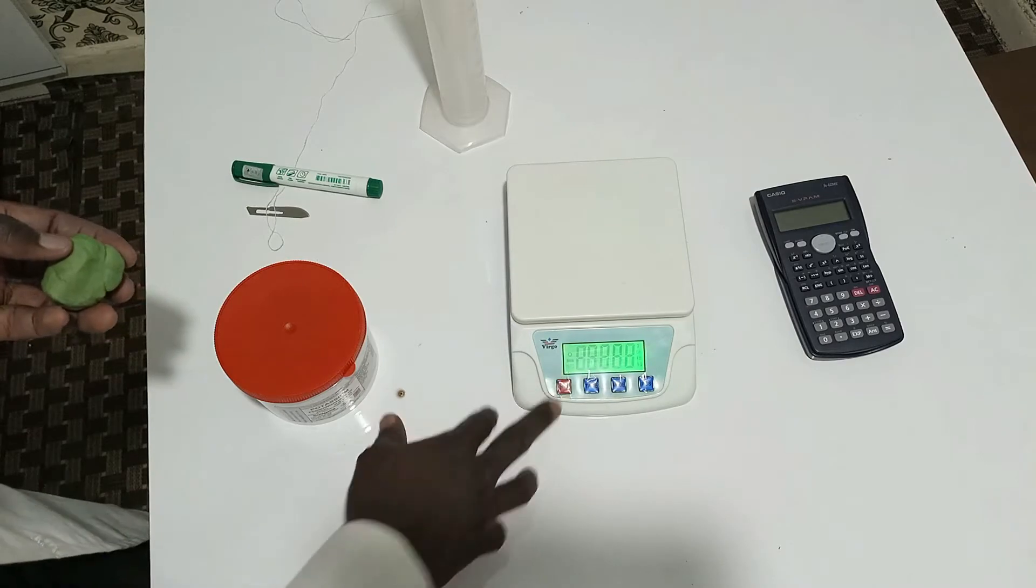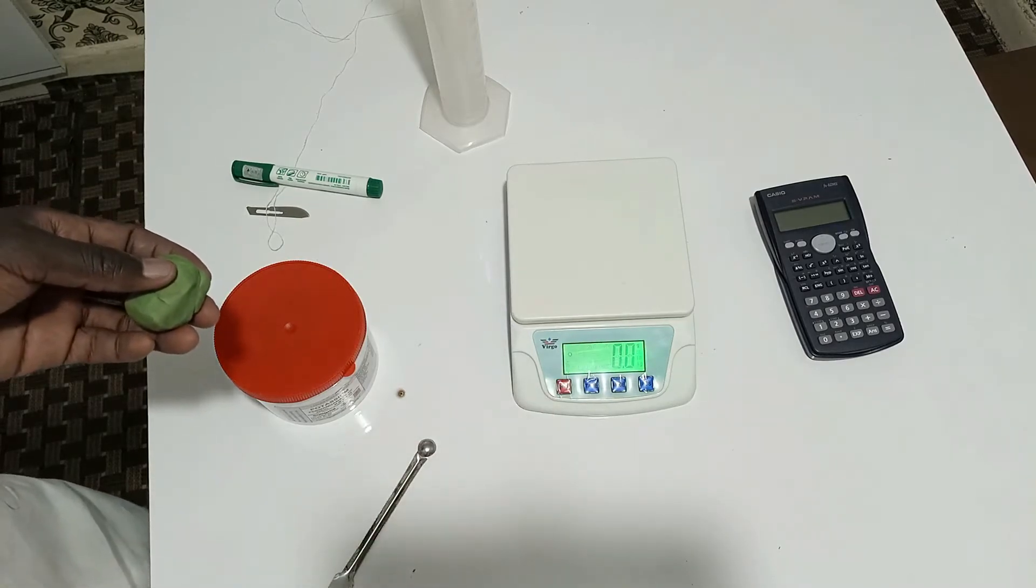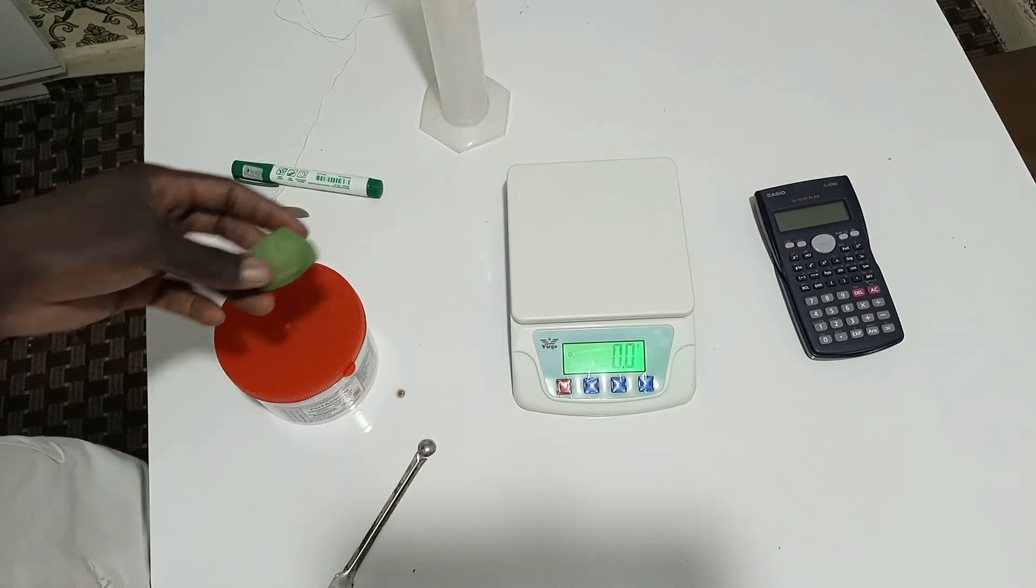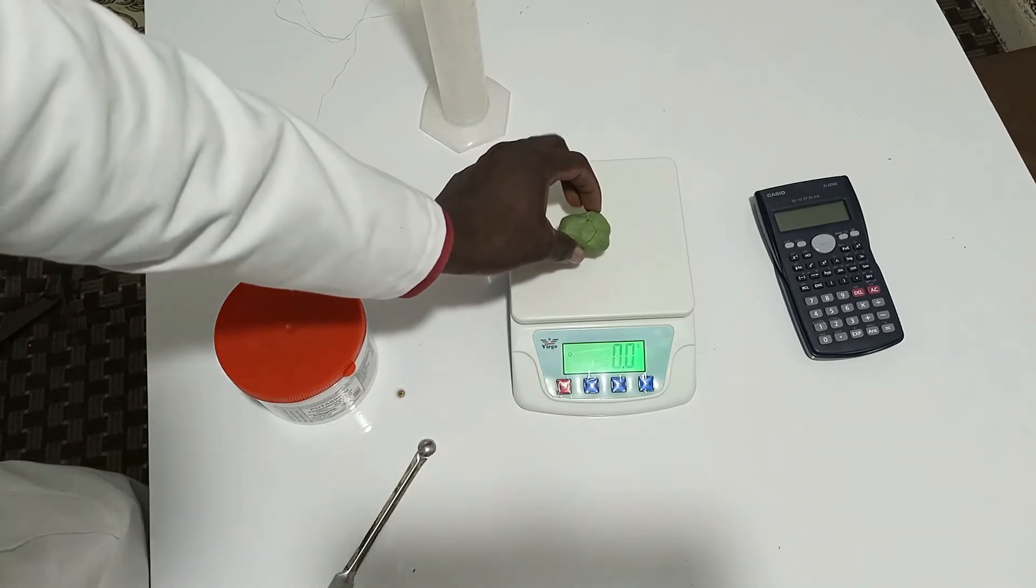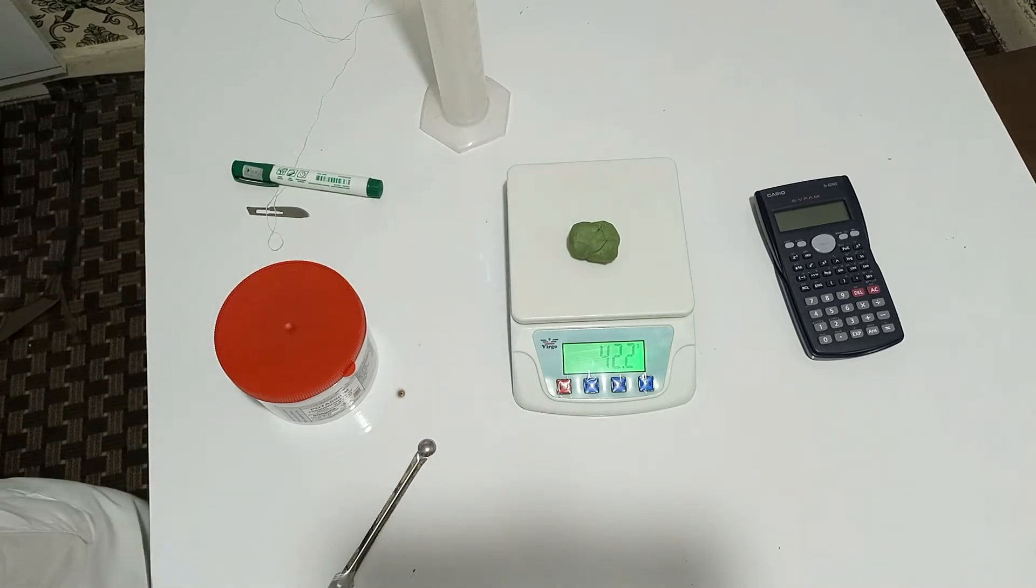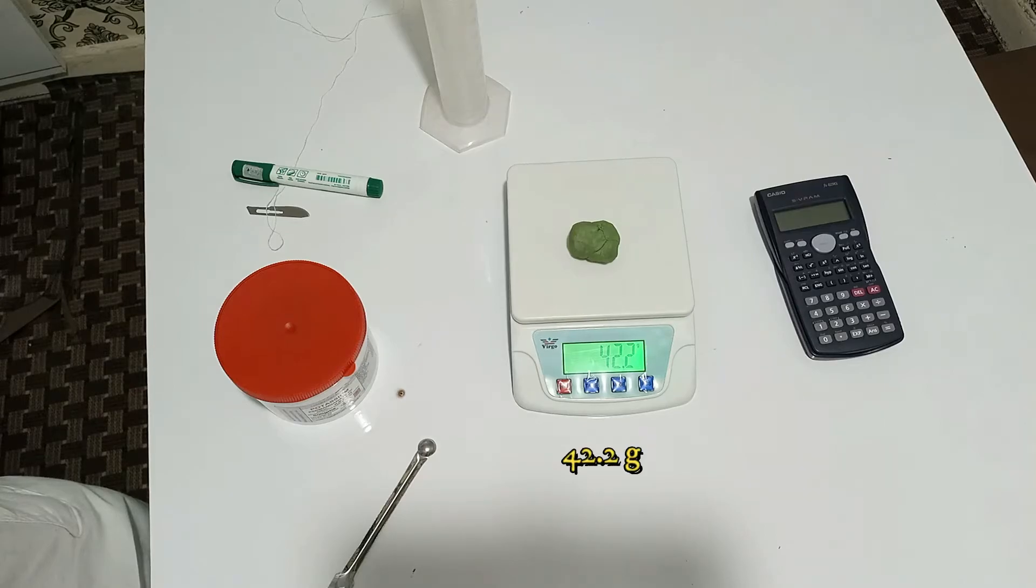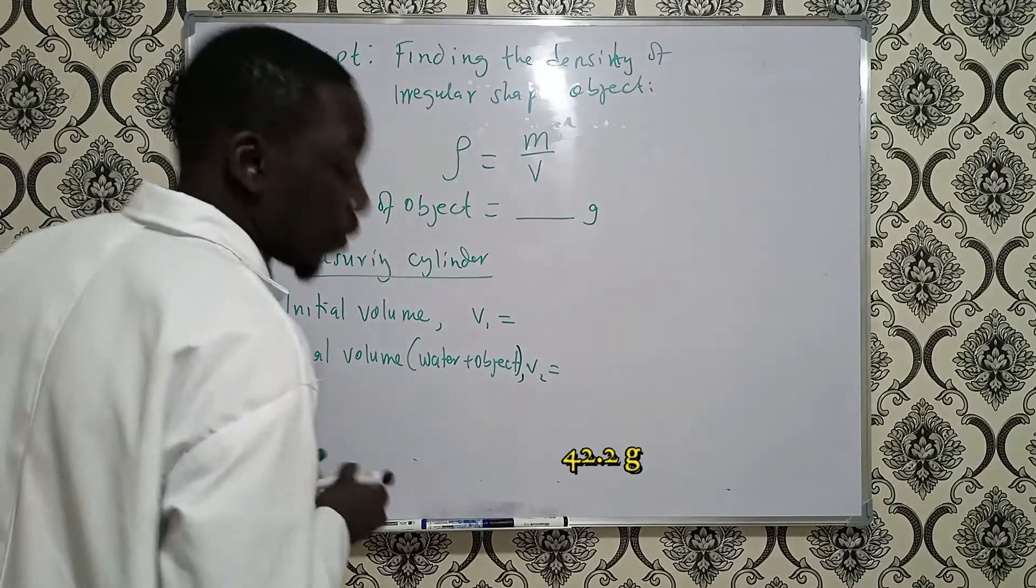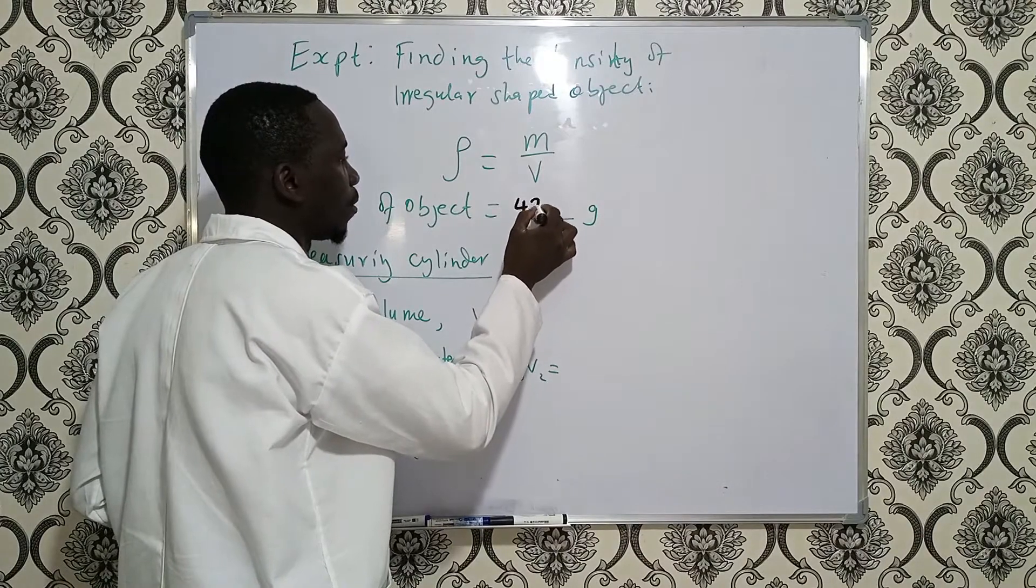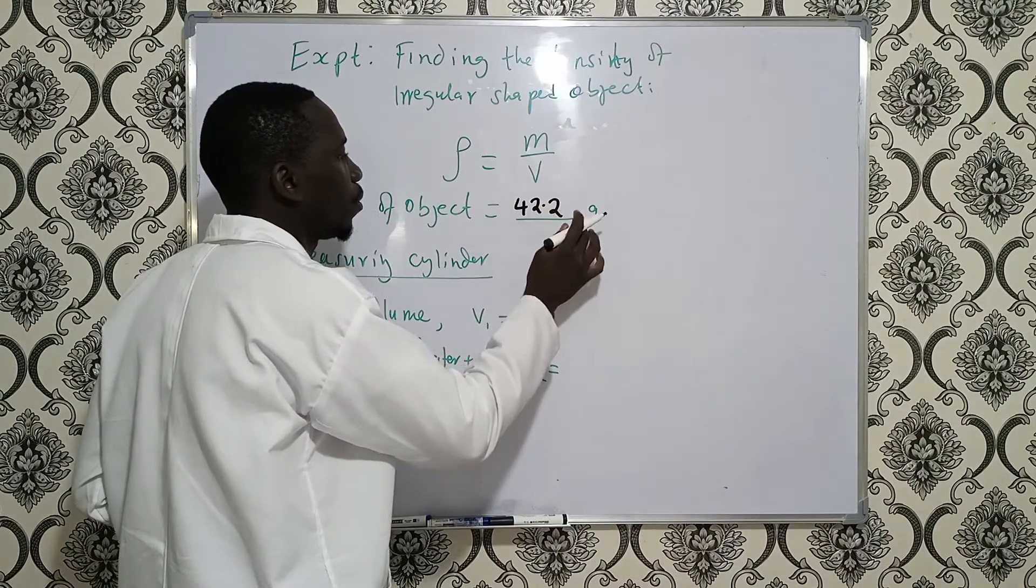Now, I will put it on. The mass, I will put it on. And then, as you can see, there is no zero error. So, it is already tared. When I put it there, that is the mass. That is 42.2 grams. So, the mass of our object, as we already measured, is 42.2 grams.